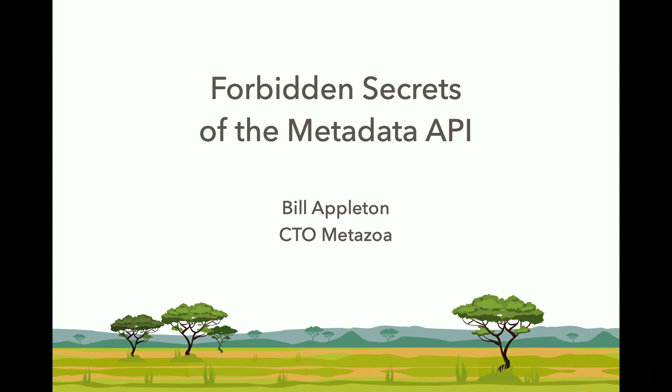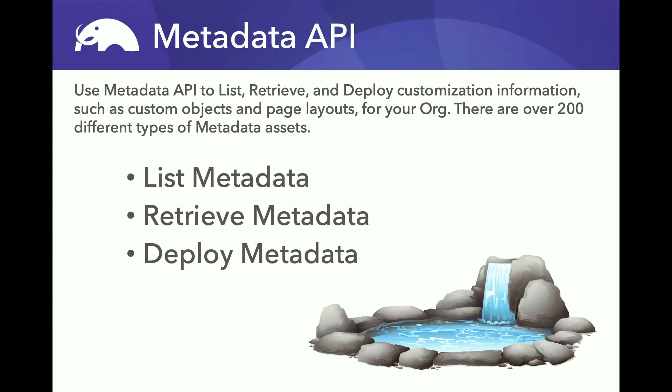How many people in the audience have used the metadata API or know what I'm talking about? So quite a few. That's great. Today I'm really going to talk about three things the metadata API can do, which are pretty much the major things it can do: it can list metadata, it can retrieve metadata, and it can deploy metadata.